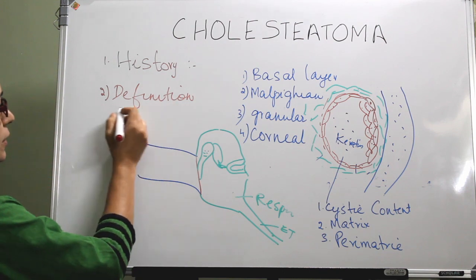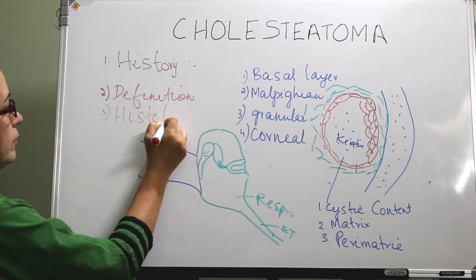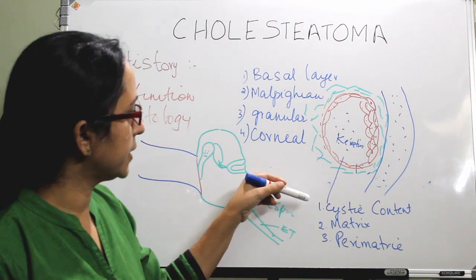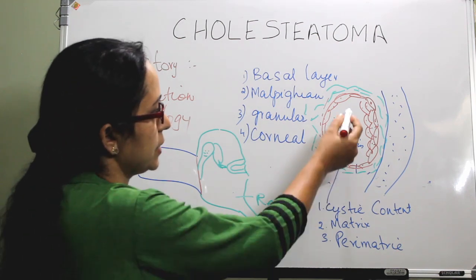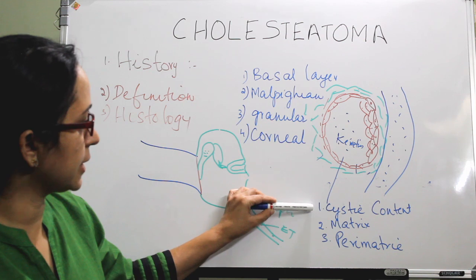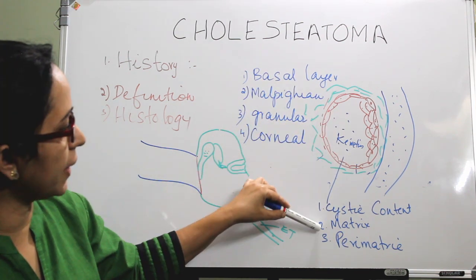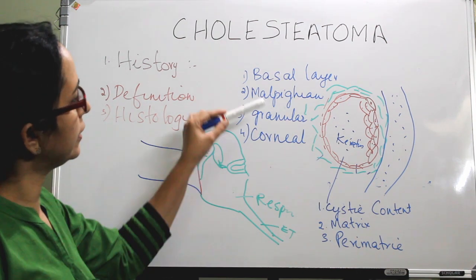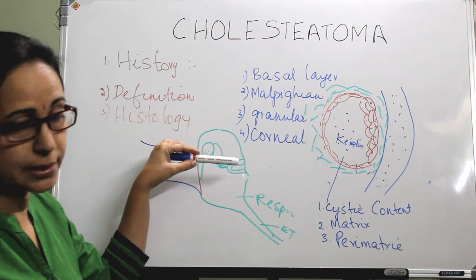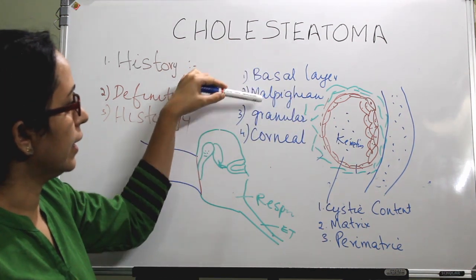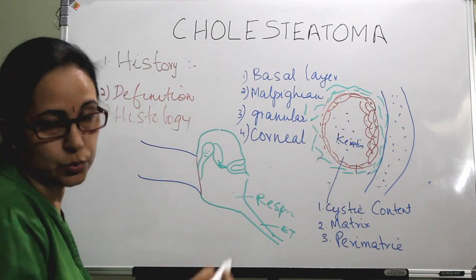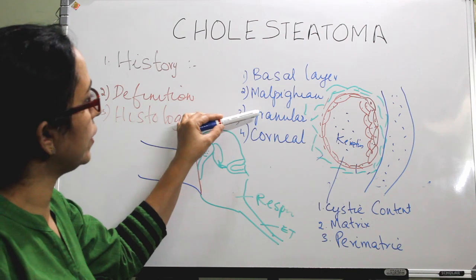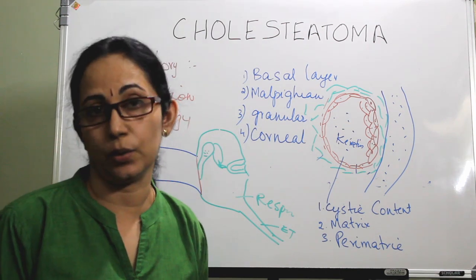Regarding histology: according to one concept, cholesteatoma has a cystic matrix and perimatrix areas. The central part containing keratin debris is the cystic unit; the stratified squamous epithelium around it is the matrix; and the fibrous stroma is the perimatrix. Another histological classification divides it into four layers: the innermost basal layer, the Malpighian layer, the granular layer, and the outermost corneal layer of keratinized squamous epithelium. There is also in-growth of epithelium from the granular layer into the basal layer.